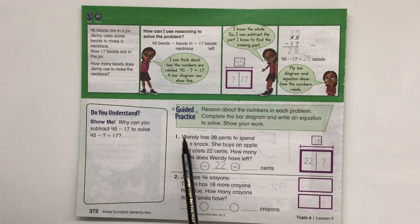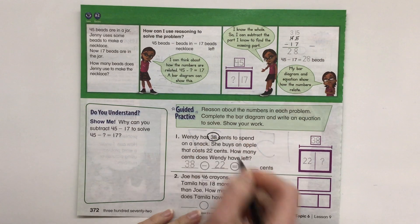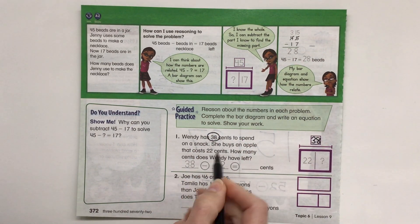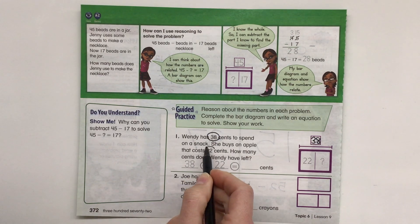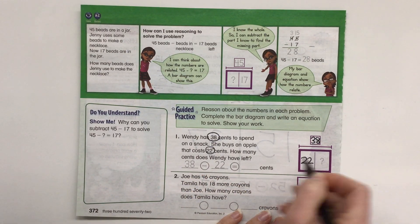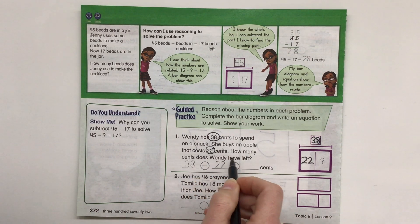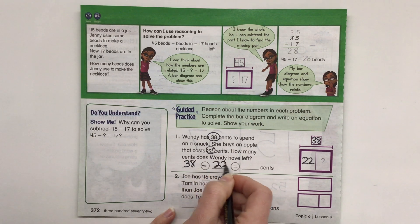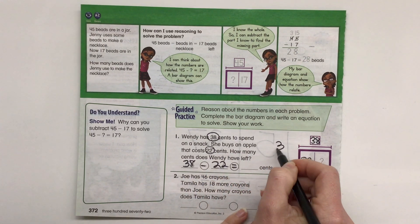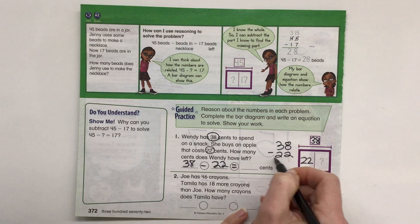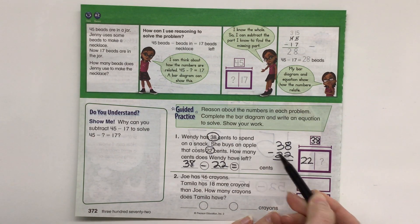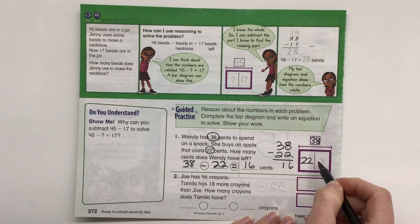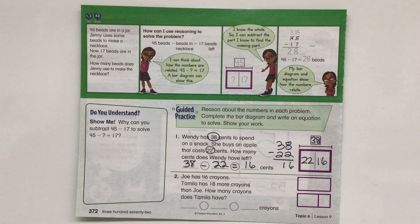Show your work. Wendy has 38 cents to spend on a snack. So we know our total is 38, that's the total amount she has to spend. She buys an apple that costs 22 cents. How many cents does Wendy have left? So that's what we're solving for. 38 minus 22 equals, I'm going to stack them, 38 minus 22. 8 minus 2 is 6, 3 minus 2 is 1. So we have 16 cents left over.